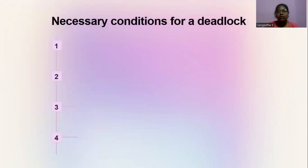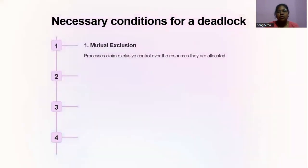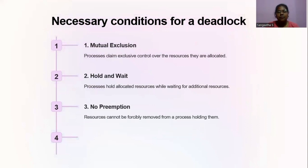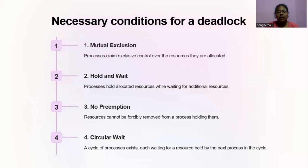Necessary conditions for a deadlock. The first condition is mutual exclusion — processors claim exclusive control over the resources they are allocated. Hold and wait — processors hold allocated resources while waiting for additional resources. No preemption — resources cannot be forcibly removed from a process holding them. Circular wait — a cycle of processes exists, each waiting for a resource held by the next process in the cycle.